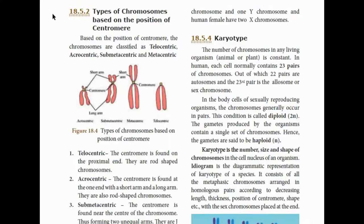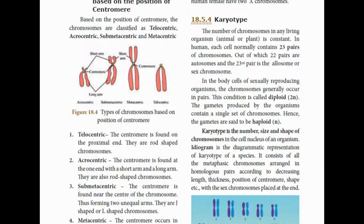The importance of telomeres in chromosomes is established. Next, types of chromosomes based on the position of the centromere. There are four types: telocentric, acrocentric, submetacentric, and metacentric. Telocentric: the centromere is at the proximal end — the starting point — so the chromosome attaches at one end. These are rod-shaped chromosomes. Acrocentric: the centromere is found at one end with a short arm and a long arm.